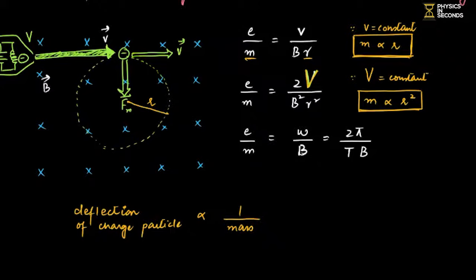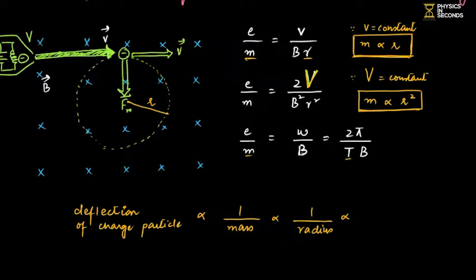Mass and radius have a direct relation, while deflection and radius have an inverse relation. What about Time Period? The relation between time period and deflection is also inverse — the particle that deflects more has a smaller time period.